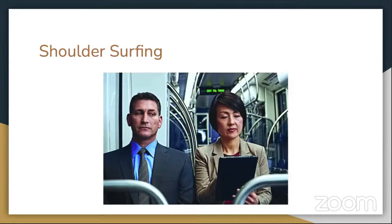Shoulder surfing — being able to obtain personally identifiable information just by looking over a victim's shoulder, getting close enough to see what they're typing. It's possible to carry this further using binoculars, telescopes, small cameras, or microphones. This is very prevalent in crowded places.